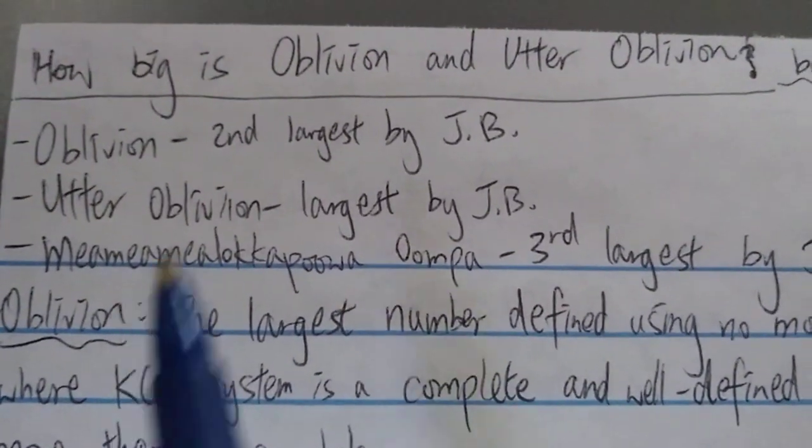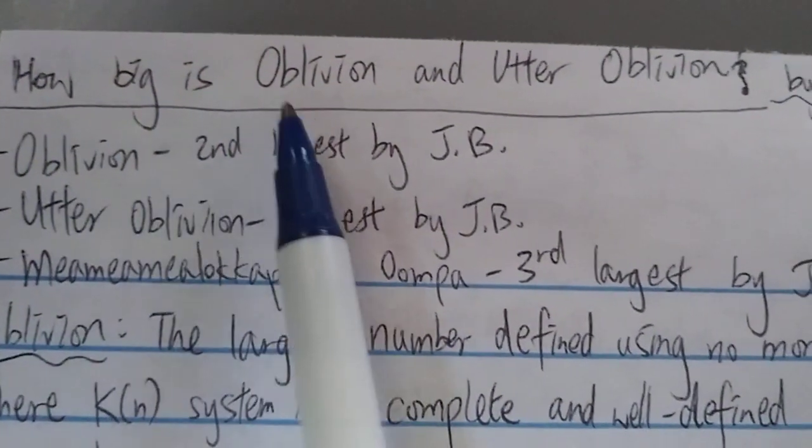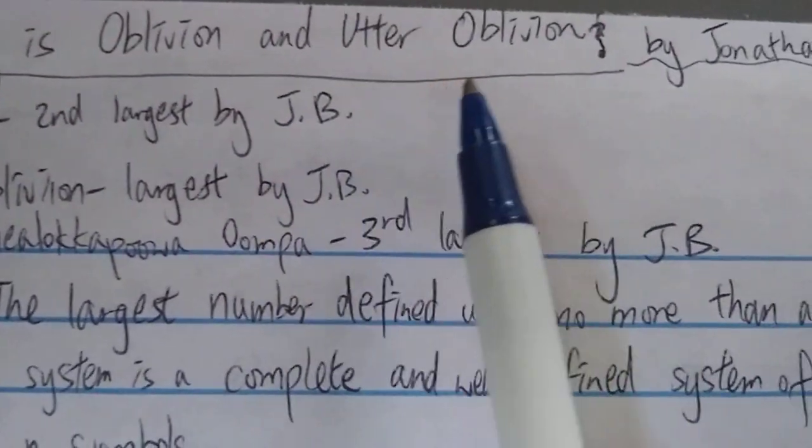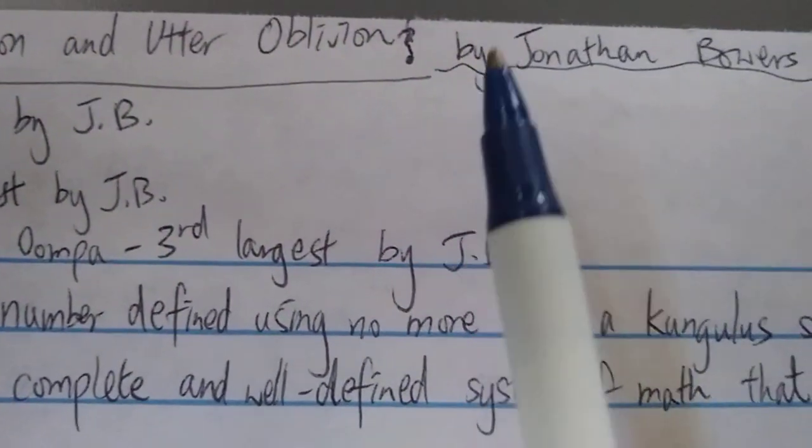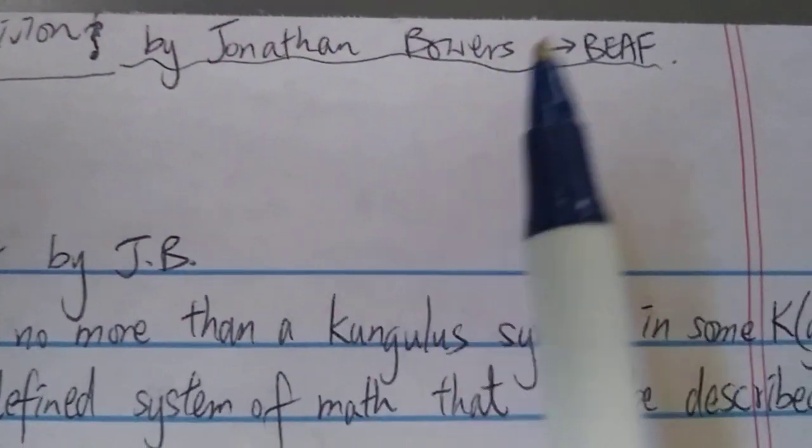Hi everyone, so today I'm going to talk about how big is oblivion and utter oblivion, which are both created by Jonathan Bowers who is the creator of the famous BEAF notation.